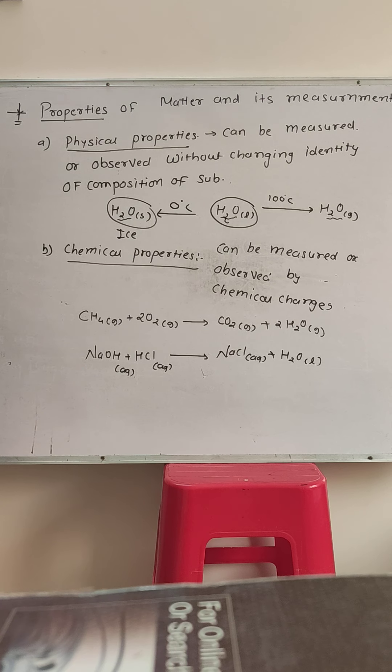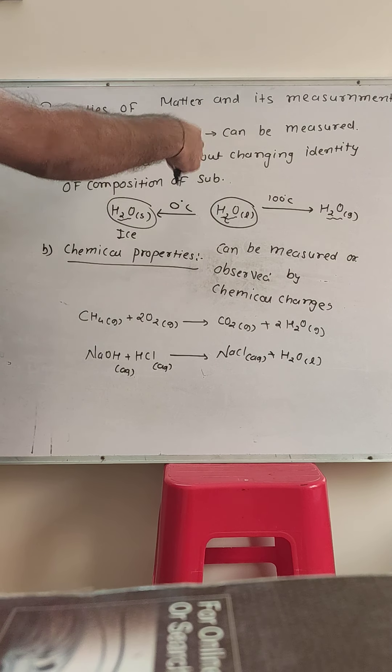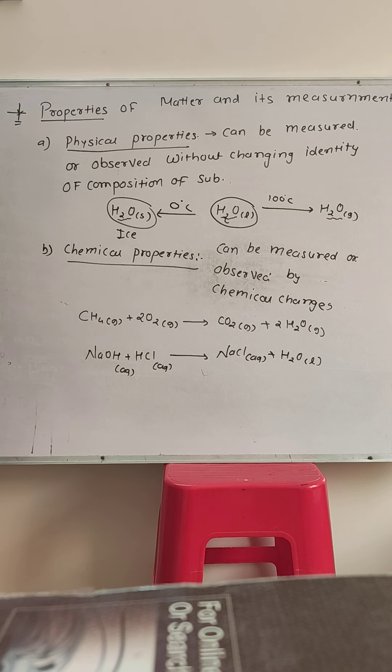Physical properties can be observed without changing the identity or composition of the substance. When I measure the melting point, boiling point, or freezing point, the molecular formula doesn't change. When I convert H2O liquid into vapor, it's still H2O. When I convert it to ice, it's still H2O. The physical state changes—solid to liquid, liquid to gas—but these properties are all measured without changing the substance's identity.